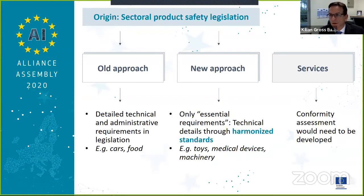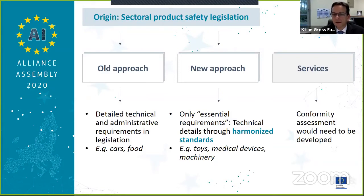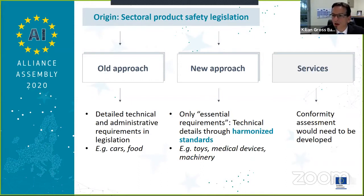So there, if you want to introduce requirements for AI, you would have to change the sectorial legislation to make it part of the assessment. On the other hand, you have new approach products — the more recent approach of the Commission — where we only have essential requirements in the legislation, which are then filled in through harmonized standards. This is the case in toys, medical devices, and machinery. So here we could much more quickly introduce through horizontal legislation requirements which could then be filled up as standards. Then we have a considerable area of services — AI systems not embedded in a product but offered as a service. Here we do not have traditional product approval legislation.